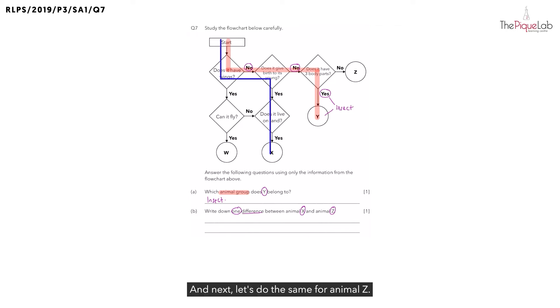And next let's do the same for animal Z, so taking a different colored pen trace out from Z all the way to the starting point. Now once we have done that, we need to find out what is the difference between both X and Z.